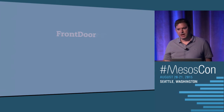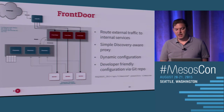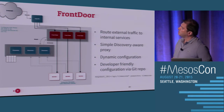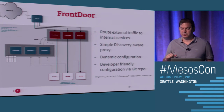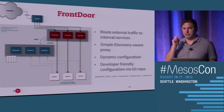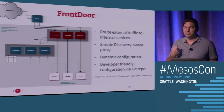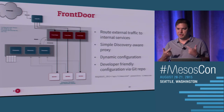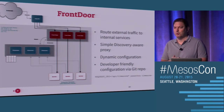We also route traffic from the outside via a software piece called Front Door. Front Door is a set of HTTP server proxies that are discovery-aware, so they know the location of all the services running in our infrastructure. When you hit Front Door with a particular request, it figures out where the service lives and routes the traffic to it. It supports dynamic configuration so we can change the configuration while the server is running. It's also developer-friendly via a Git repository, so everyone in the company can register a change, and we have the history of commits and can blame who did what.